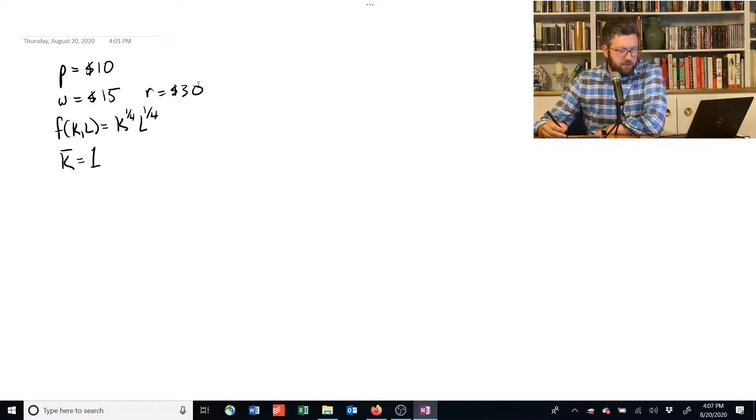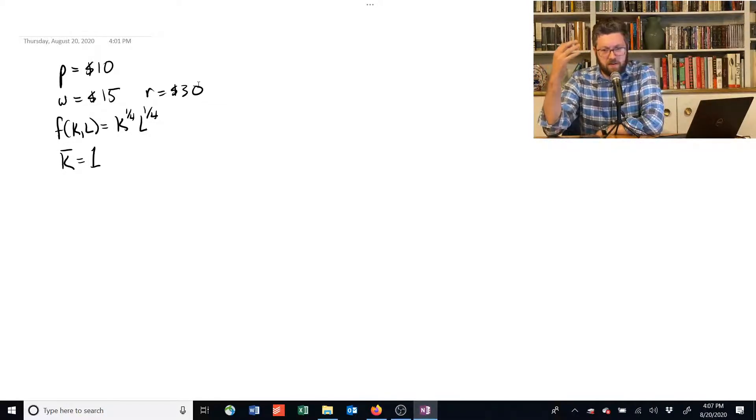Okay, let's see if we can solve this here. We've got all the raw information we need to find the profit maximizing labor demand and so on. So we've got a price of 10, wage of 15, et cetera. Here's our production function and we have one unit of capital.